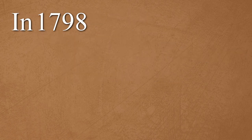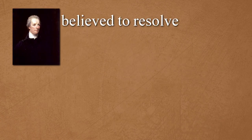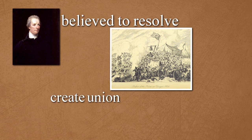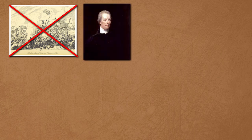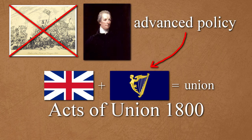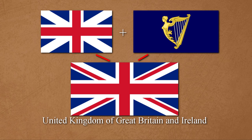In 1798, the French Revolution had also inspired Irish nationalists to attempt a rebellion against the British monarchy, which they hoped would be aided by the French. Pitt believed the only way to resolve this issue was to create a union between Great Britain and Ireland. After the rebellion was defeated, he advanced the policy, and a union was established by the Acts of Union of 1800. Great Britain and Ireland formally unified to become the United Kingdom of Great Britain and Ireland on January 1st, 1801.